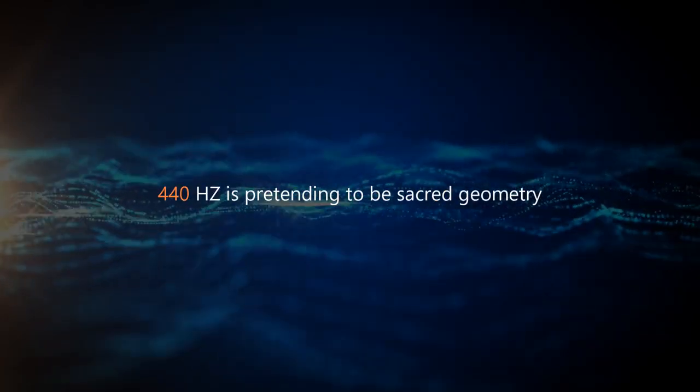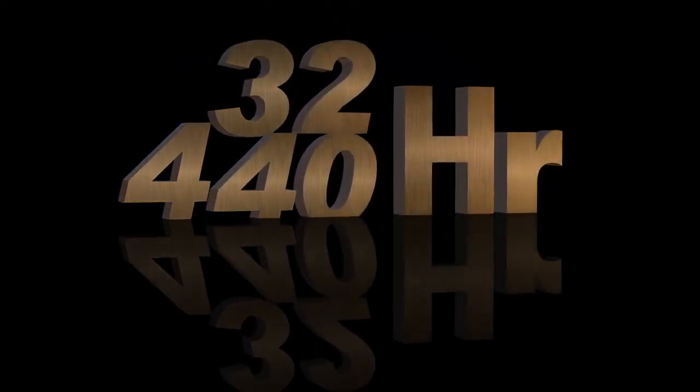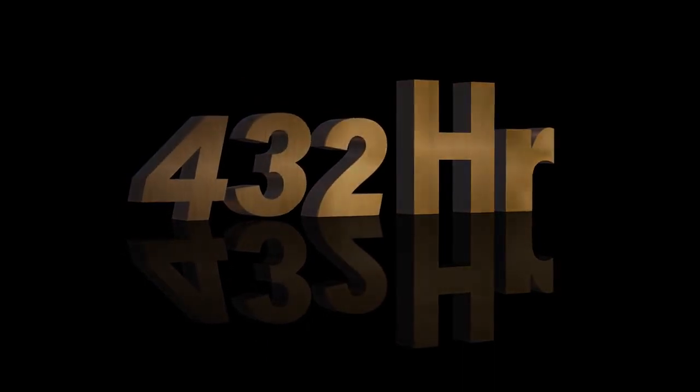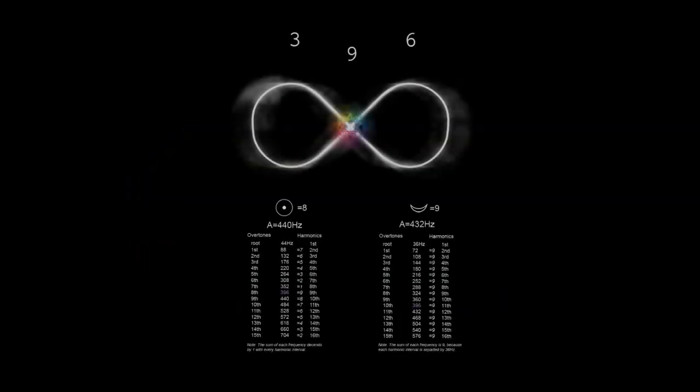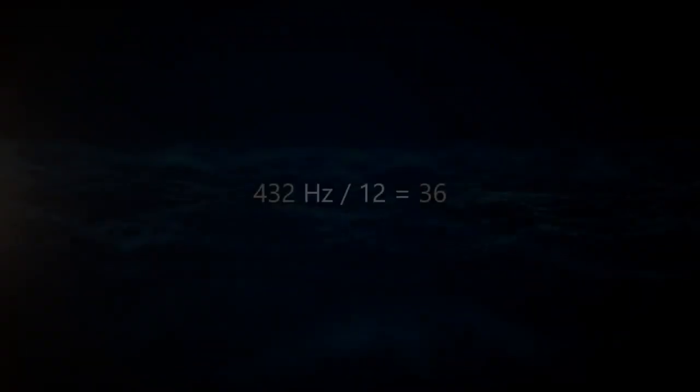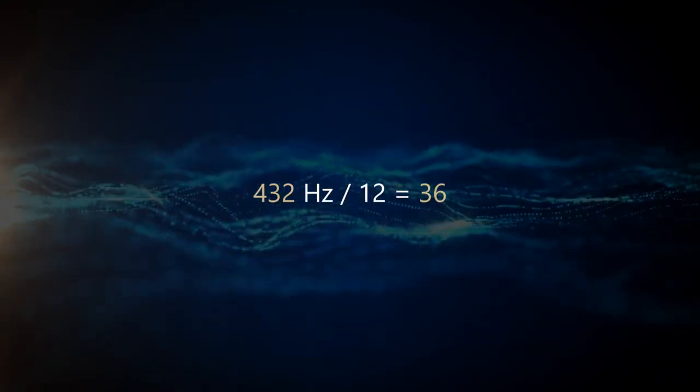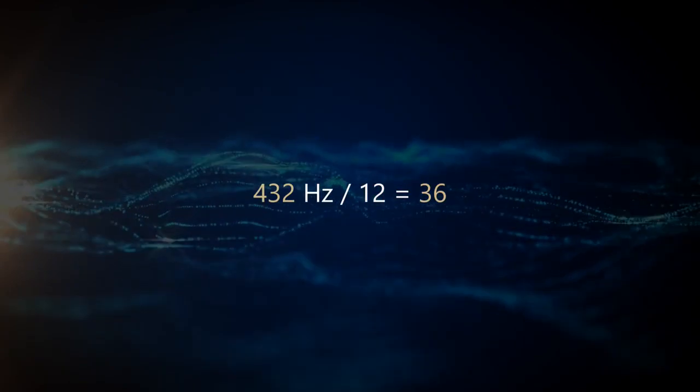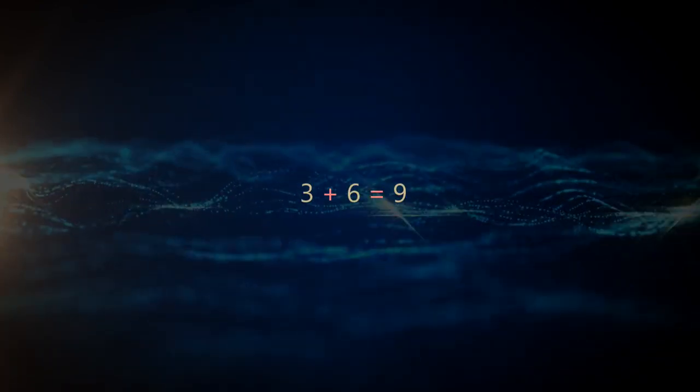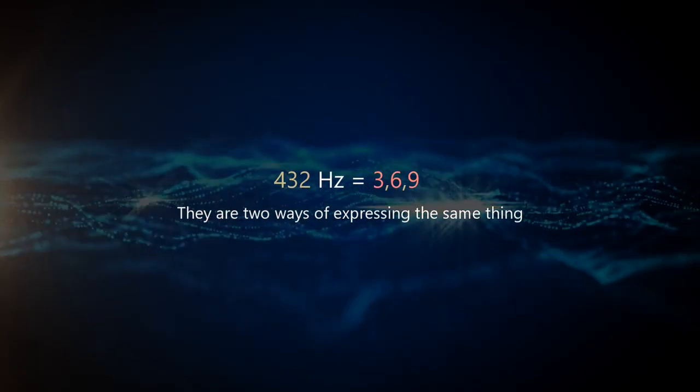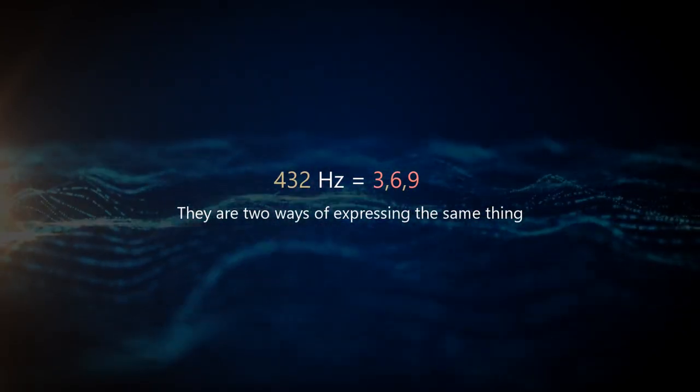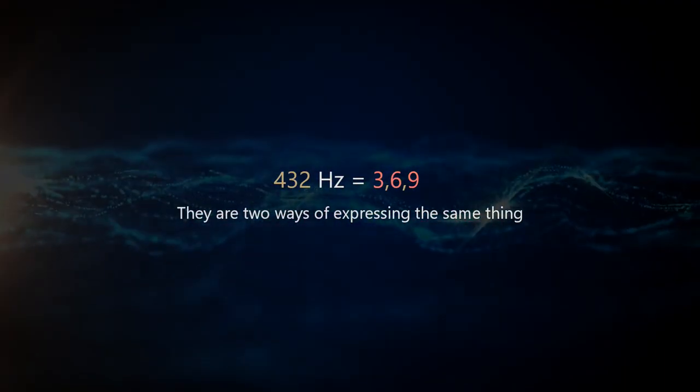432 Hertz divided by 12 equals just 36. I heard it said perfectly that 440 Hertz is pretending to be sacred geometry. The 440 Hertz is the closest one can come to the real thing while still being an imposter. 432 Hertz divided by 12 equals 36. Now if we add these numbers together, 3 plus 6 equals 9. 432 Hertz equals 369. There are two ways of expressing the same thing: the real thing.